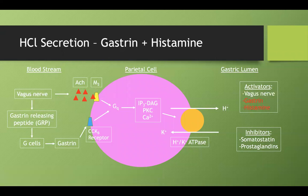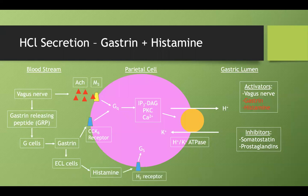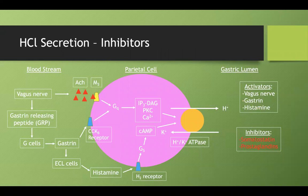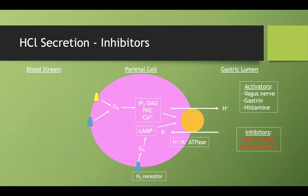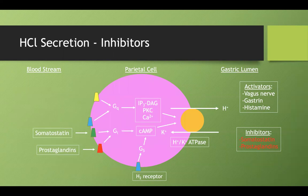The histamine pathway: gastrin, in addition to binding the CCK-B receptor, can activate ECL cells to produce histamine. That histamine binds to an H2 receptor, starting an intracellular cascade via a Gs protein that activates cyclic AMP, ultimately activating the H+/K+ ATPase. As for inhibitors — they bind to their own receptors, which are Gi-coupled. Gi-coupled proteins inhibit cyclic AMP, thereby reducing hydrogen ion secretion.